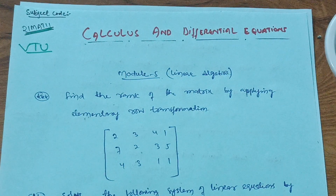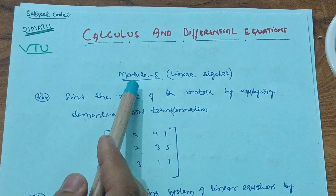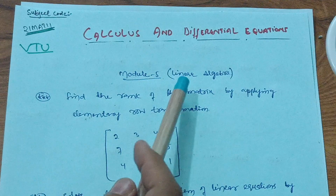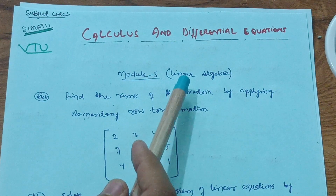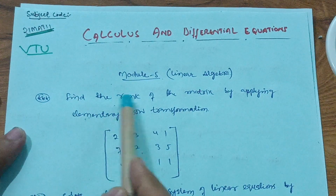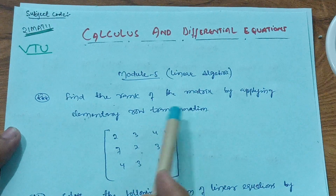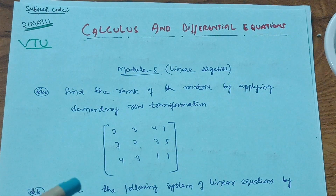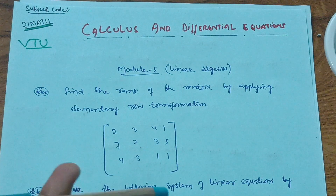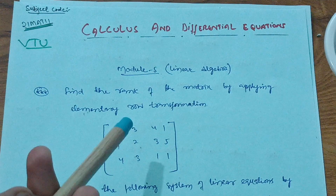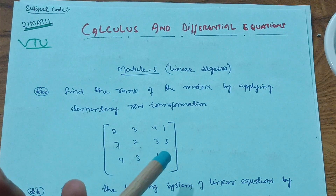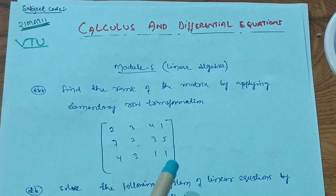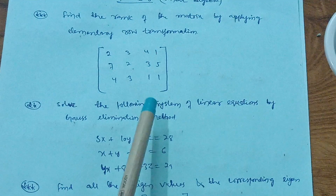First, go through Module 5, which is the easier module. It covers 12th class basic concepts on matrices — the chapter is called Linear Algebra. The first important question is: find the rank of the matrix by applying elementary row transformation. You change the rows and calculate the rank of the matrix. If you want problem-solving videos on this, comment below and I'll make videos accordingly.